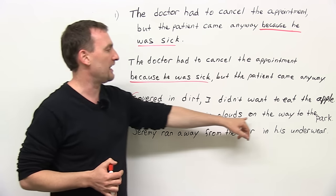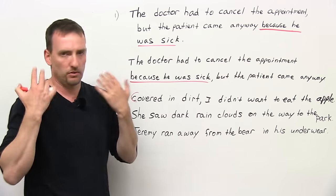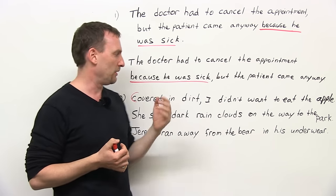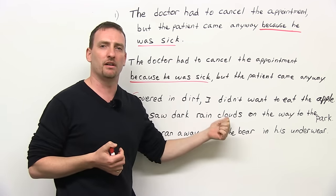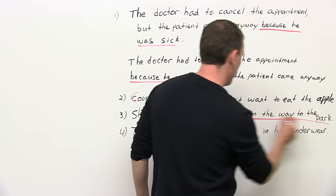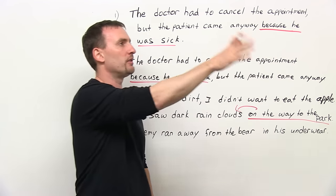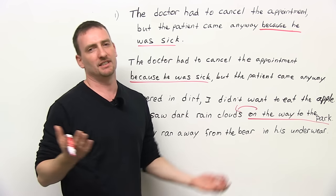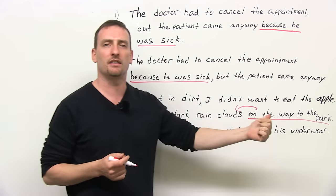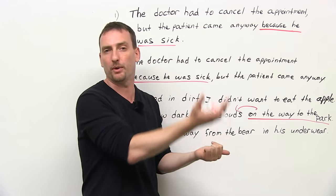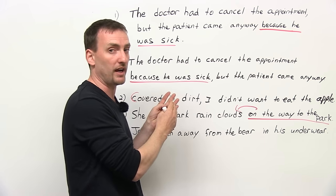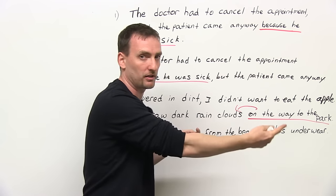'She saw dark rain clouds on the way to the park.' You think, okay, she's going to the park and there are clouds. The problem is she's not on the way to the park — the clouds are on the way to the park, because that's where you placed them. So you would say: 'On the way to the park, she saw dark rain clouds.' Now I understand that it's she who is on the way to the park, not the rain clouds. Remember, all you have to do is put the modifier next to the thing you're trying to modify.